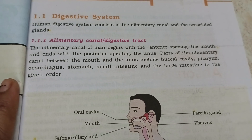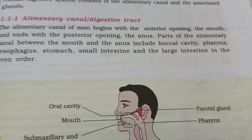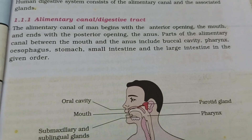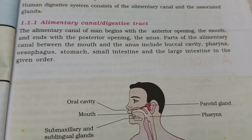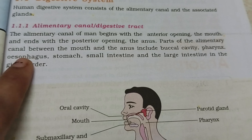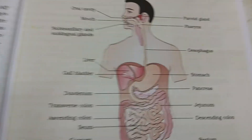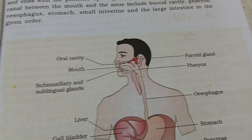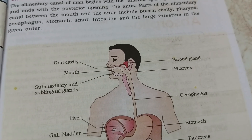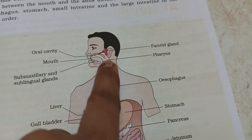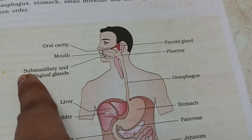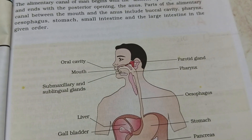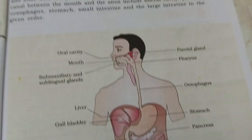Parts of the alimentary canal between the mouth and anus include the buccal cavity — an open space. The buccal cavity contains the teeth, tongue, and salivary glands. Then comes the pharynx, and the esophagus which is the food pipe. The three parts of salivary glands are the parotid, submaxillary, and sublingual glands.